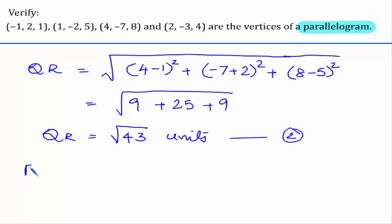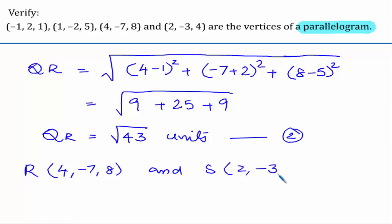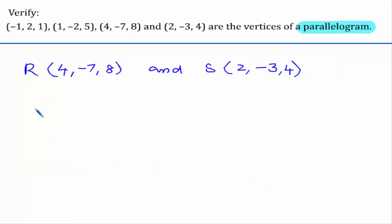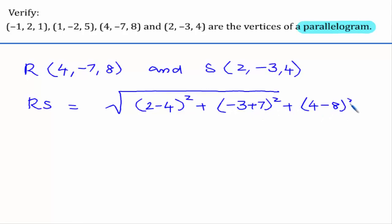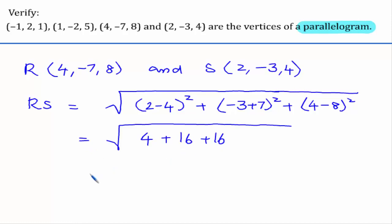Similarly, let us consider R as (4, -7, 8) and S as (2, -3, 4) and find distance RS. We compute: (2 minus 4) whole square plus (minus 3 plus 7) whole square plus (4 minus 8) whole square. Simplifying, we get 4 plus 16 plus 16. This gives root 36, that is RS equals 6 units.